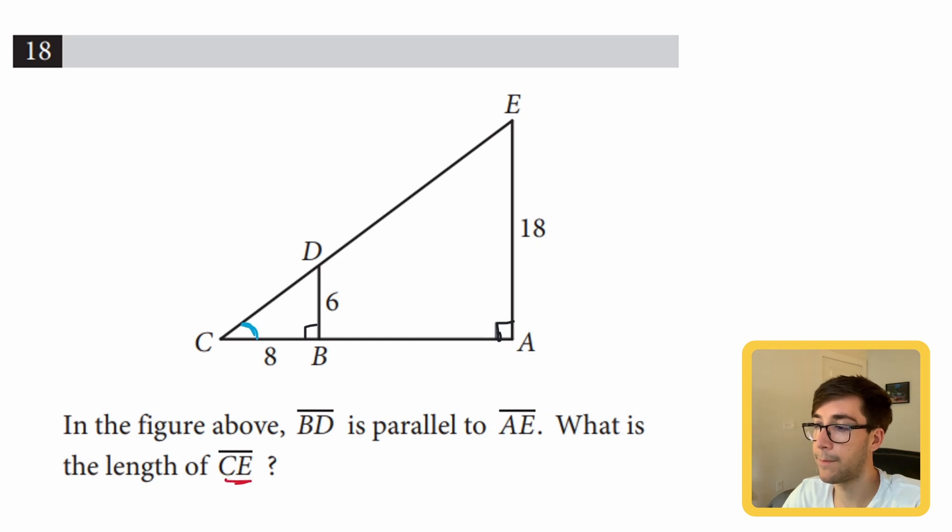In similar triangle problems, you usually have to use the other triangle and then scale it up. Let's find what would correspond to this big side in the smaller triangle, which would be this one down here. I'll say that's y. To find this one, we can use Pythagorean theorem because we have these two other sides.